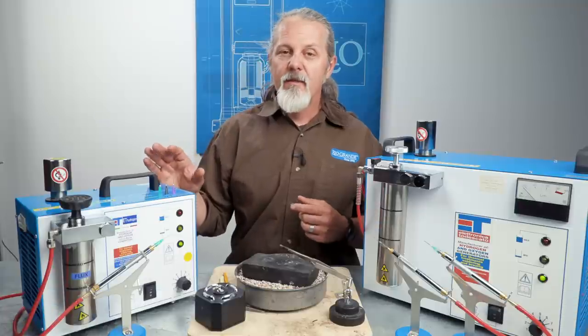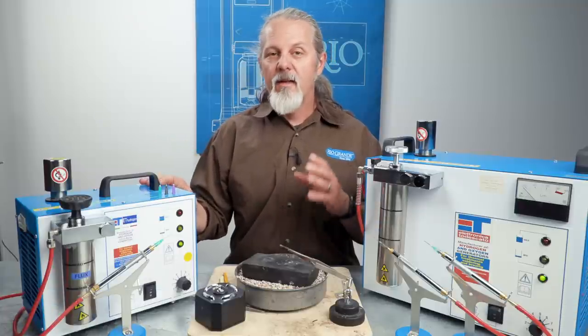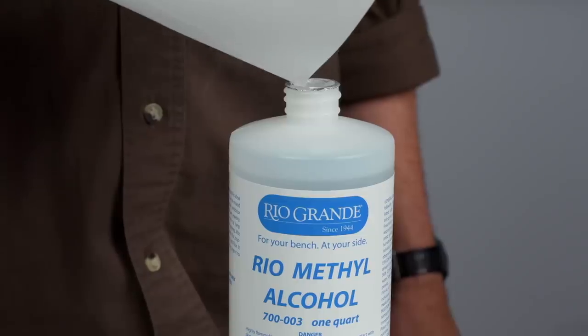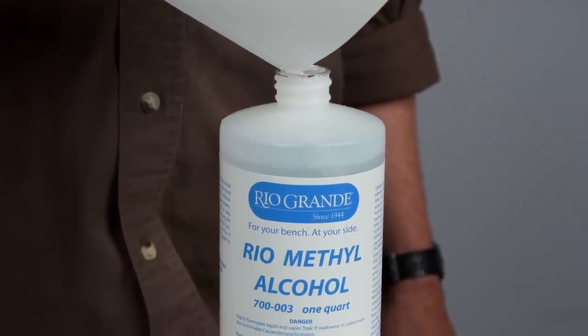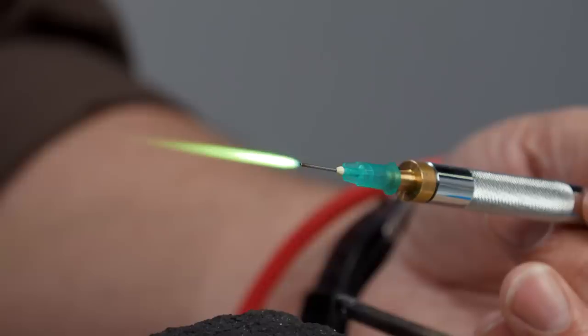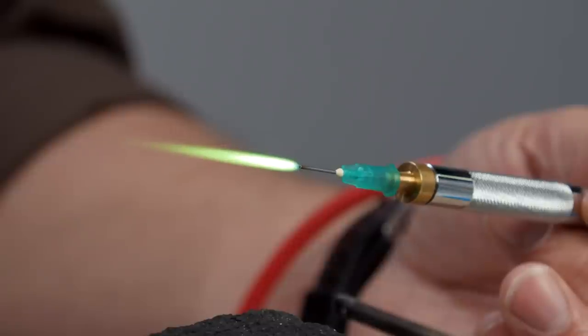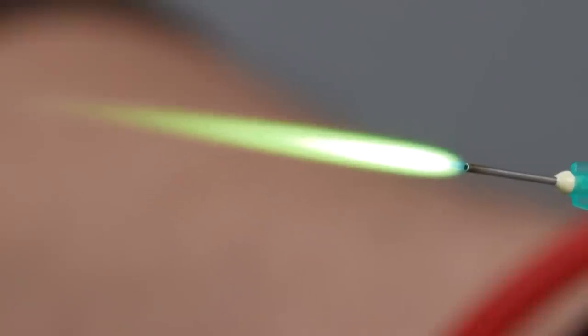So even though it doesn't have fuel tanks, a hydrogen system does need a few things to make it easier to operate. Hydrogen produces a soft blue flame that's a little hard to see, so you want to mix some methyl alcohol with flux solution. That produces a green flame that's easier to see and it'll keep your solder joints from oxidizing, plus it looks cool.